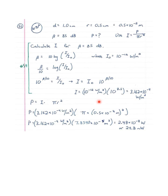This derivation to find intensity from decibels will also be used in question number 54. Now that we know the intensity, power equals intensity times pi r squared. Plugging in the intensity and the area, we get a power of 2.58 times 10 to the negative 8 watts, or 24.8 nanowatts.